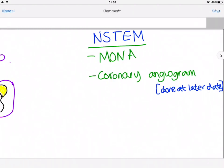For an NSTEMI, it's less invasive. You give MONA: morphine, oxygen, nitrate, and aspirin. You can give an additional antiplatelet if needed, like clopidogrel, usually only in highest risk patients. The second procedure is a coronary angiogram, which can be done at a later date.